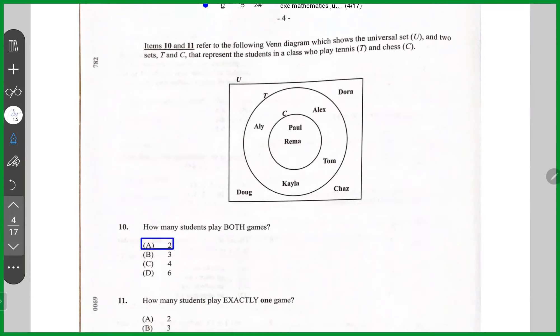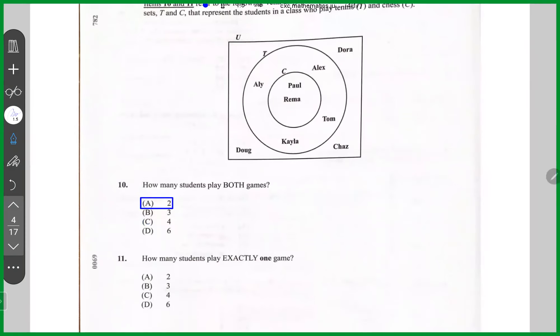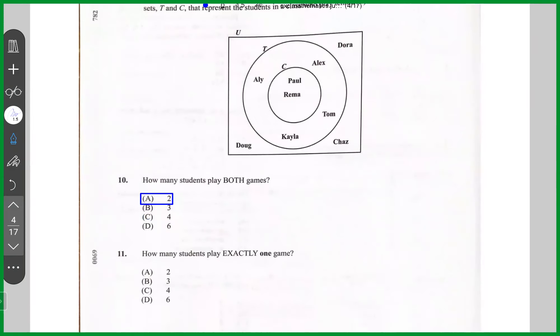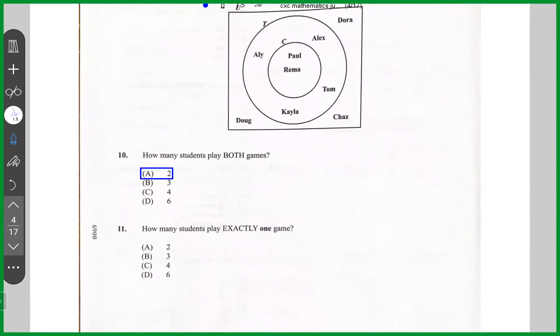How many play exactly one? Well, that would be Ali, Alex, Tom, and Kayla. So that's four. Four students play exactly one.